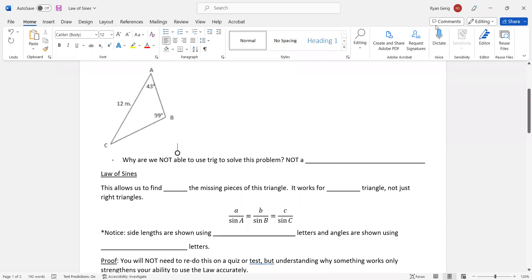In this triangle here, why were we not able to use trig to solve this problem, the trig that we've been doing? Well, it's not a right triangle, right? If it's not a right triangle, we couldn't do anything with this at this stage of what we know. However, today I'm going to show you a way to do this, and that is using the law of sines.